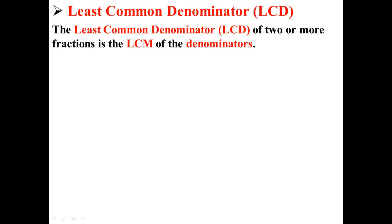The least common denominator, or LCD, of two or more fractions is the LCM of the denominators. For example, here we have two fractions: 4 over 5 and 3 over 8.